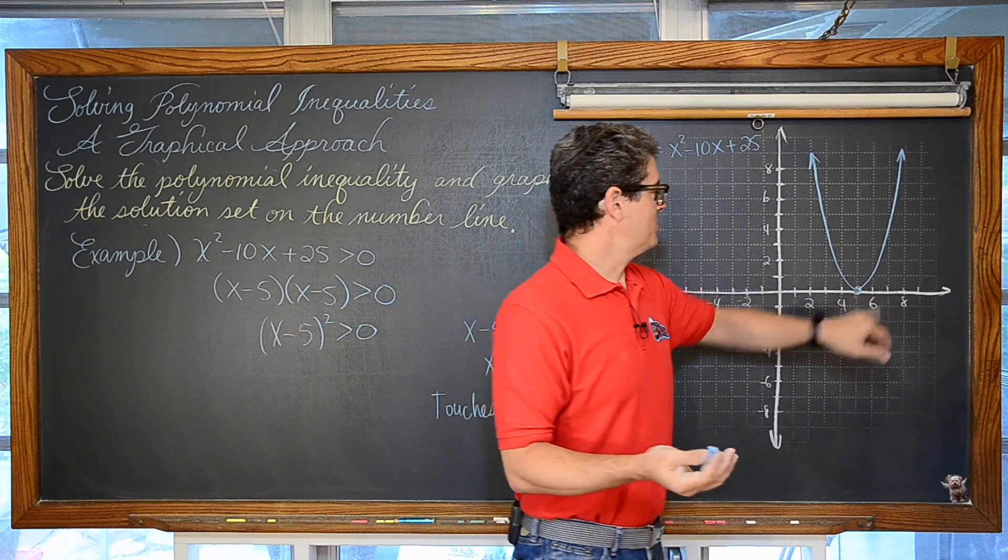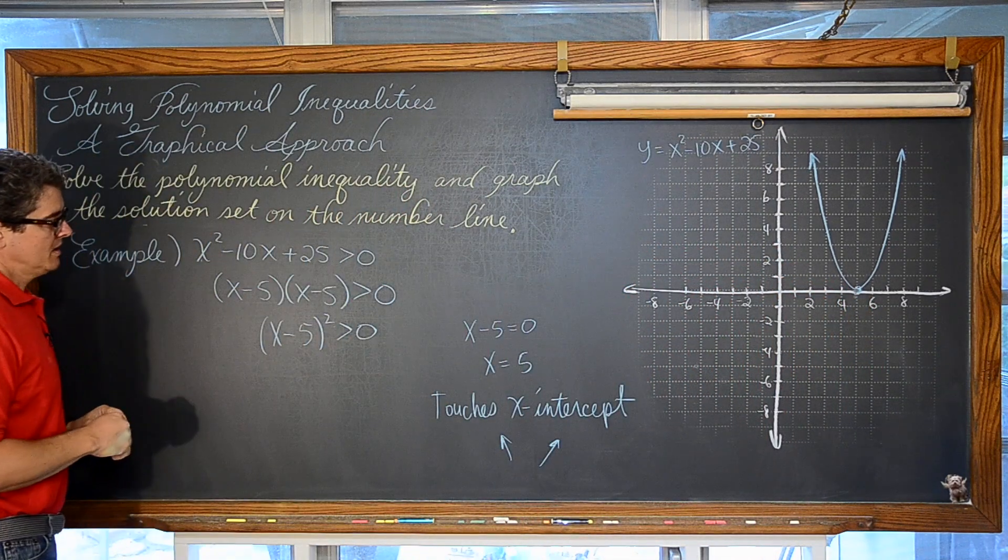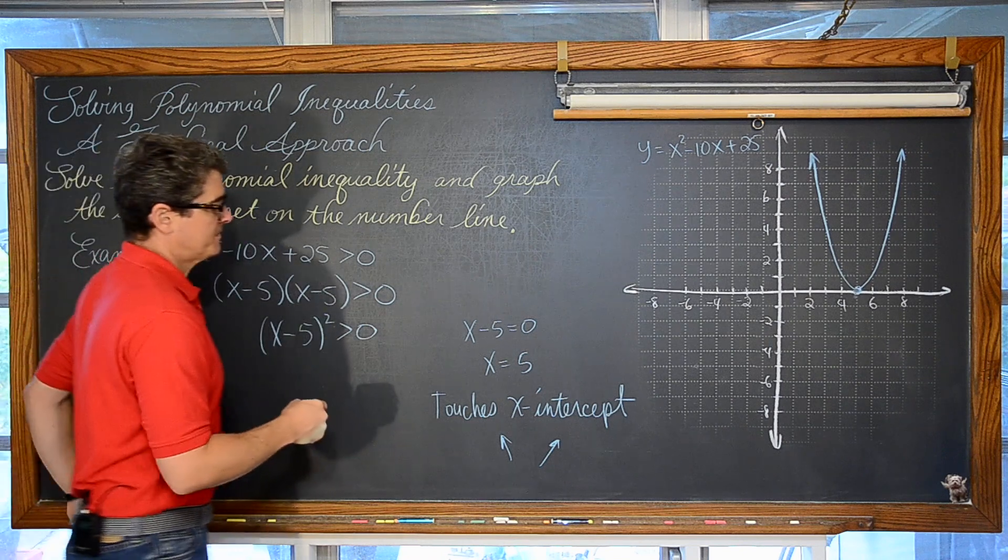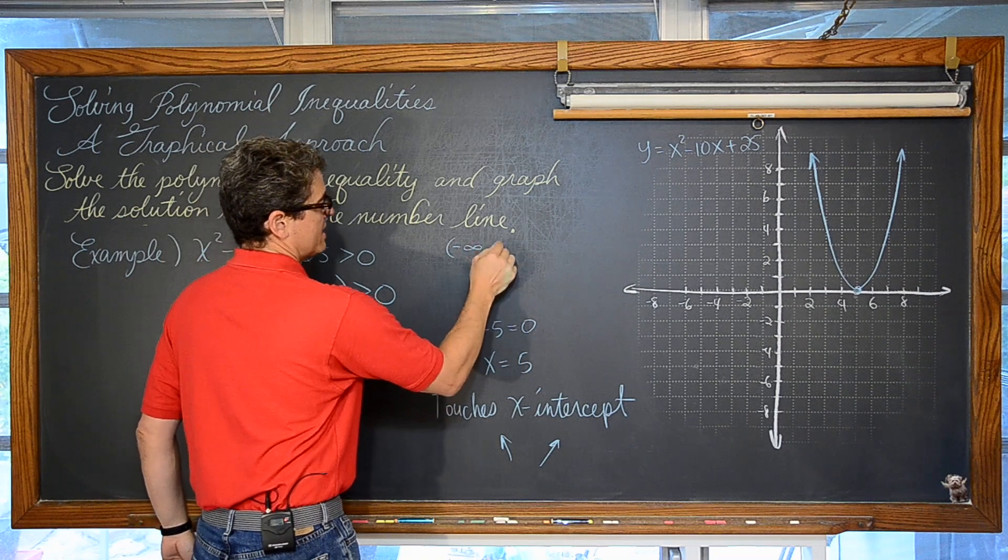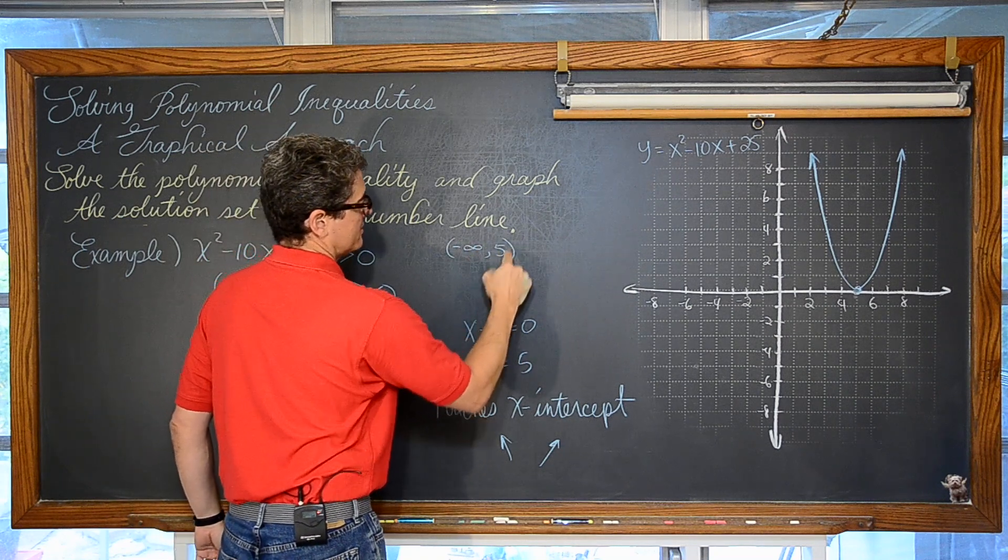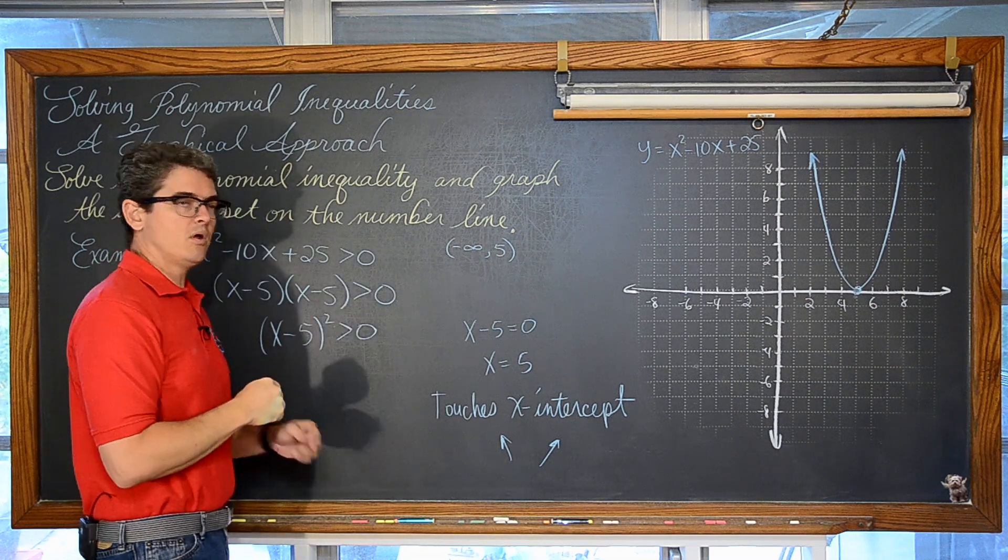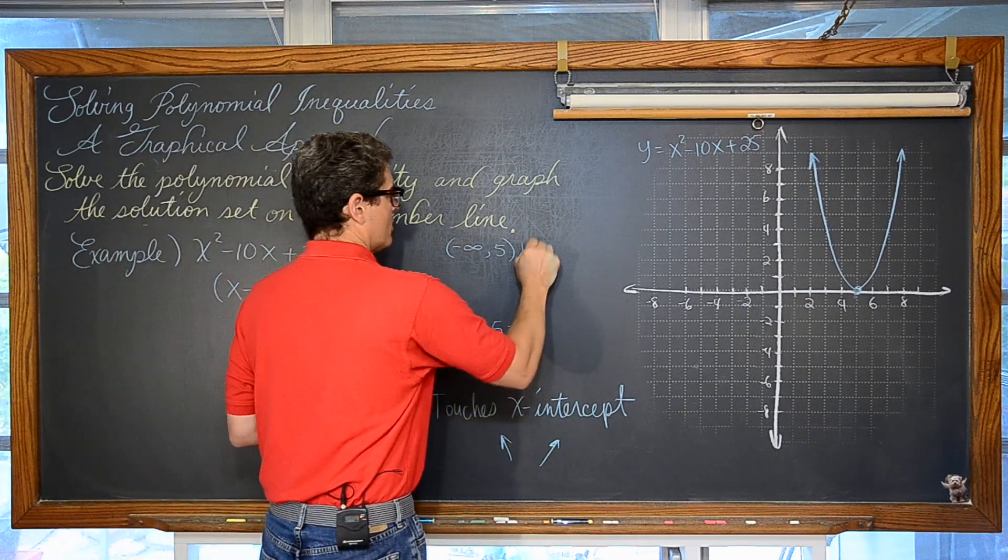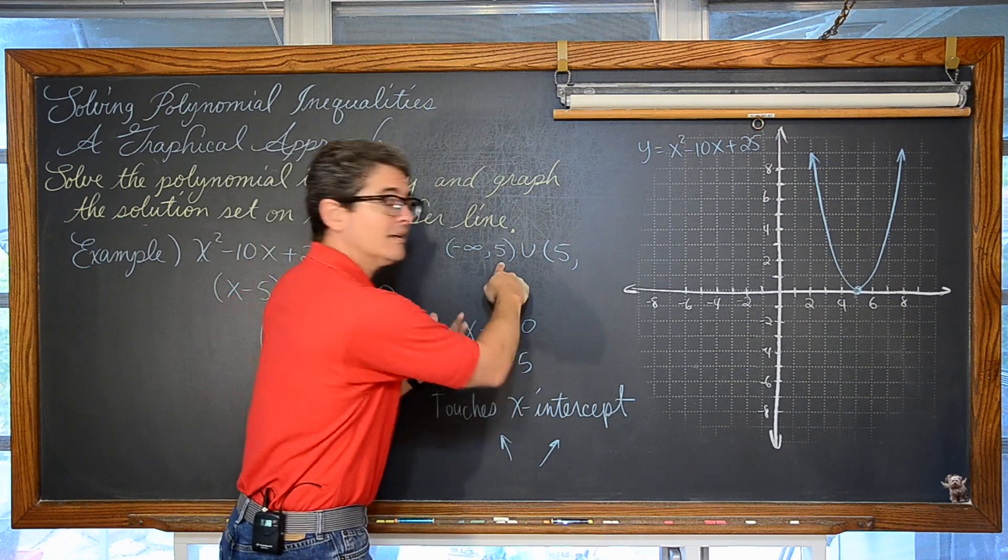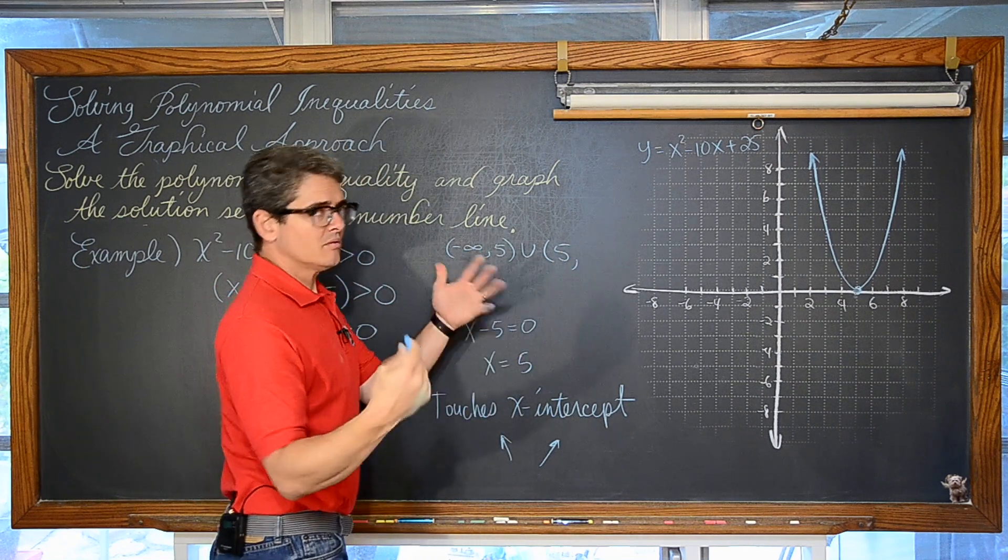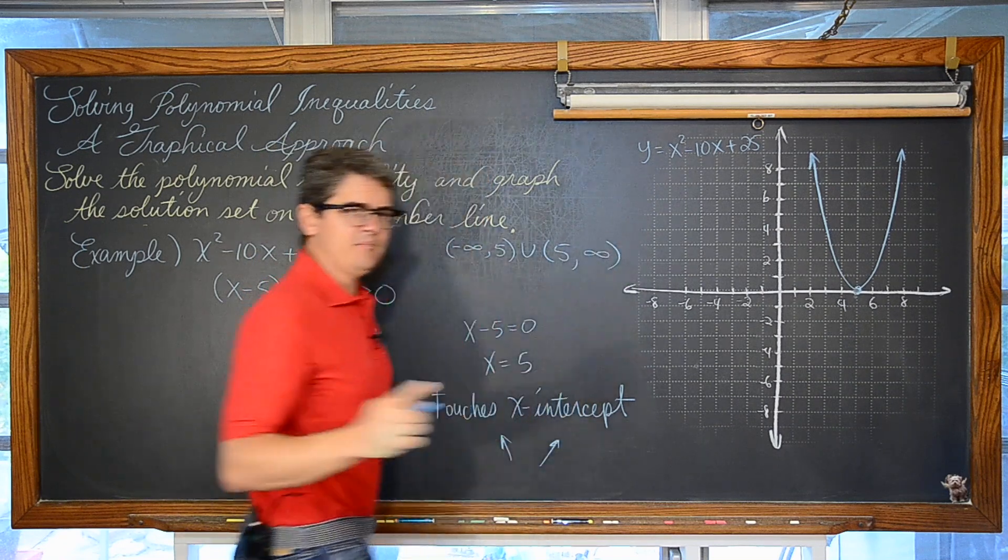So our solution to this polynomial inequality is that we have solutions from negative infinity to 5, now I am going to use a round parenthesis, right, because there is no equal sign in our inequality, it is just greater than. Or we can pick up on the other side of 5, so like 4.9999 and 5.00001 and then we are going to go from 5 to infinity and beyond.